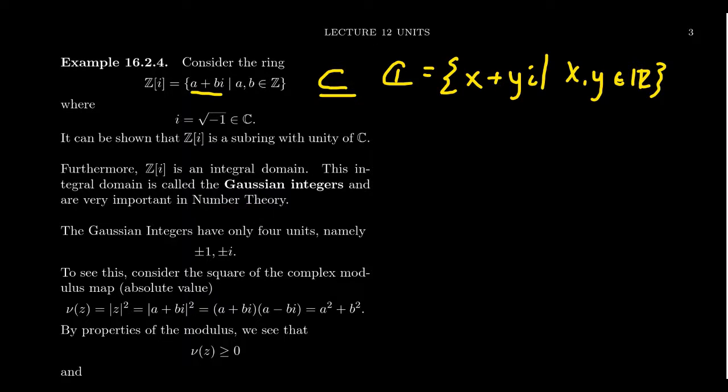I want to mention that the Gaussian integers are an integral domain just like the integers, but they're not a field. There do exist Gaussian integers that don't have multiplicative inverses. In fact, the number of units inside the Gaussian ring is actually really really small.